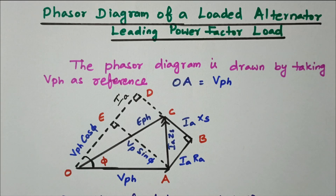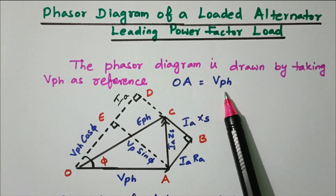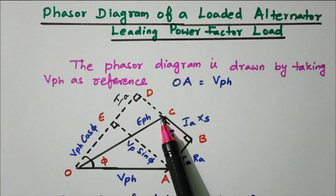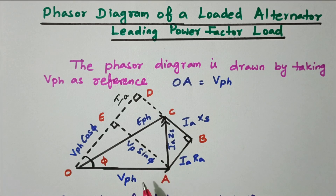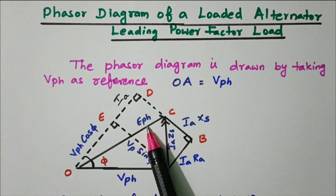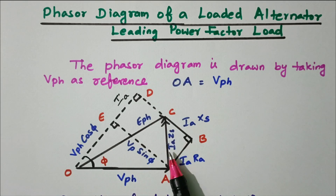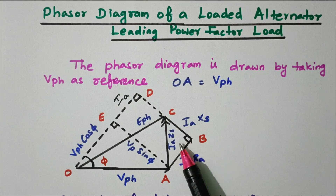Now we will see the phasor diagram. This phasor diagram is drawn by taking V_phase as a reference, where OA equals V_phase — the voltage at the load terminal. Our aim is to find E_phase, the EMF generated at the alternator, which is the vector sum of V_phase and IA·ZS. IA·ZS is itself the vector sum of IA·RA (armature resistance drop) and IA·XS (armature reactance drop). For a leading power factor, the current IA leads the voltage V_phase. V_phase is also divided into its horizontal component V_phase·cos φ and vertical component V_phase·sin φ.